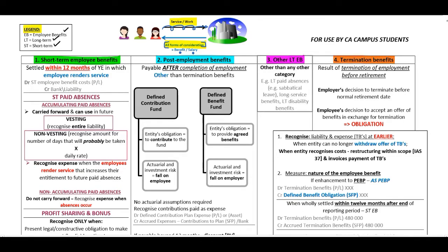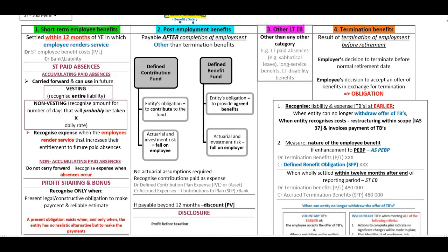Short-term employee benefits will be settled within 12 months of the year-end in which the employee renders the service. A very important example to think about is possible non-monetary benefits that can be paid by the employer. Short-term employee benefits can include wages, salaries, paid annual leave, paid sick leave, profit sharing and bonuses, and importantly, non-monetary benefits.